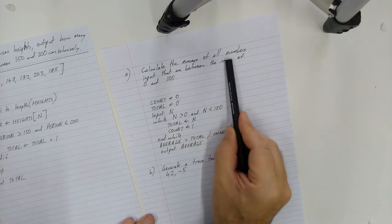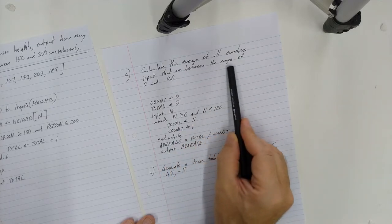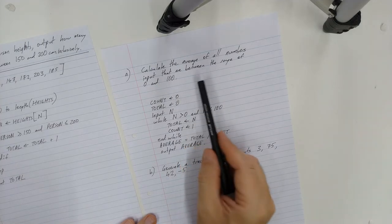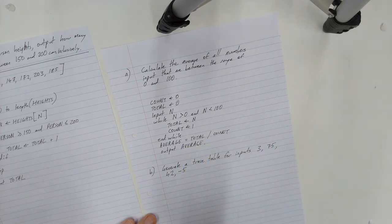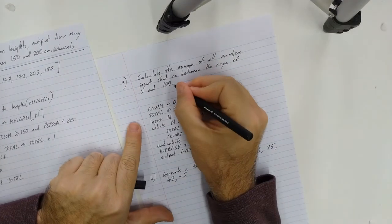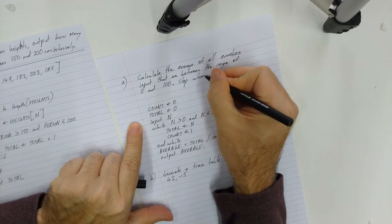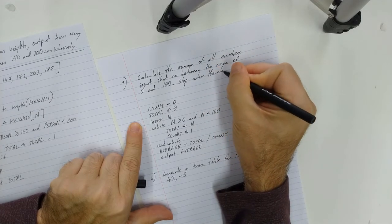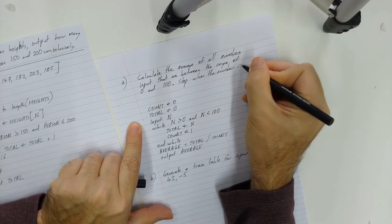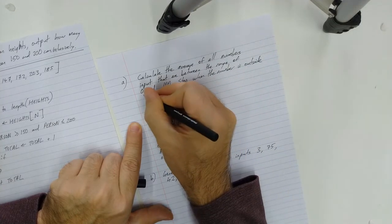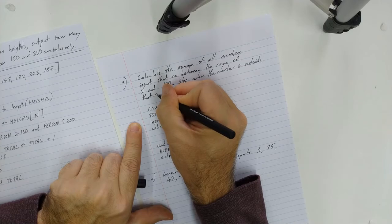So here calculate the average of all numbers input that are between the range of zero and 100. What I should have added to this question is and then stop when the number is outside that range. And I might just add that. Stop when the number is outside that range. Let's make this question complete.